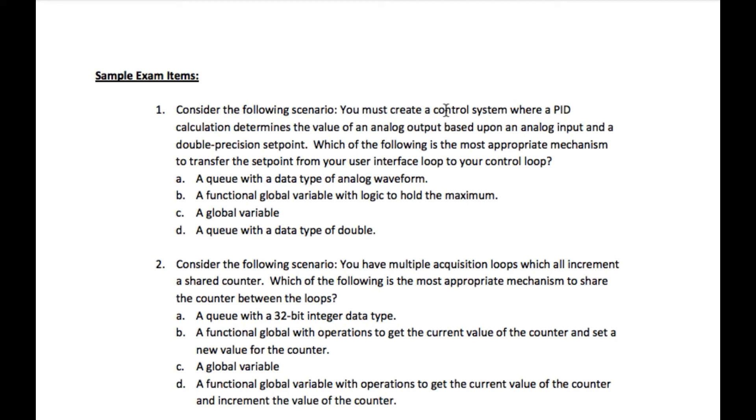Now if you look into option B and C, functional global variable is a tag-based communication system but it is saying a logic to hold the maximum value. This is not actually what we want. So in this case our answer is going to be C, a global variable, because global variable is going to be used to store the last value.